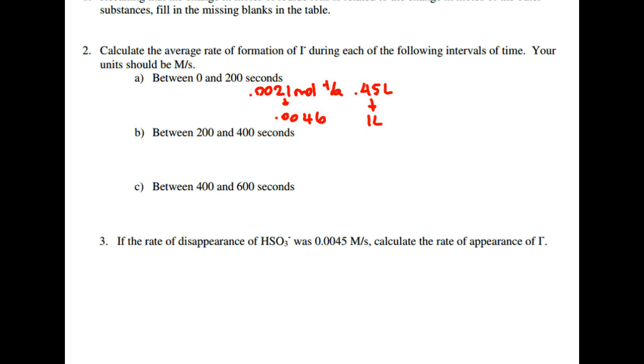And because this is moles per one liter, the amount of moles is the actual molarity. So what we're doing is putting the molarity divided by the change in seconds. In this case, 200 seconds have elapsed. And this should give you 2.33E to the negative 5 molarity per second.